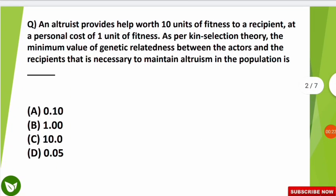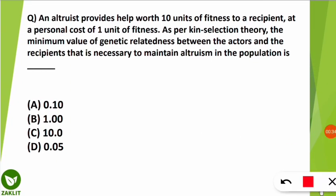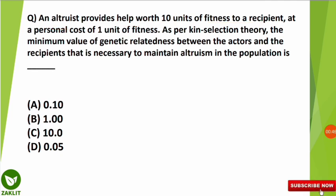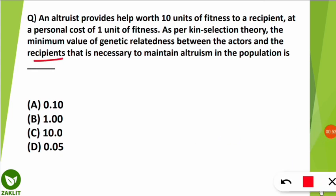Let's start today's first question. An altruist provides help worth 10 units of fitness to a recipient at a personal cost of 1 unit of fitness. As per the kin selection theory, the minimum value of genetic relatedness between the actors and the recipients that is necessary to maintain altruism in the population is how much?